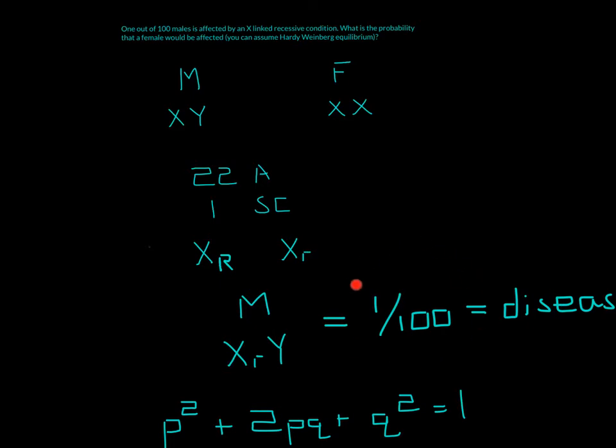So what exactly is one out of 100? Well, they're saying that it's affected by a recessive condition. So they're basically giving us the disease frequency, and we need to find the allele frequency.